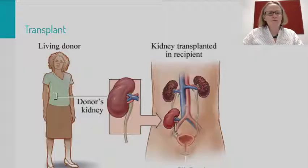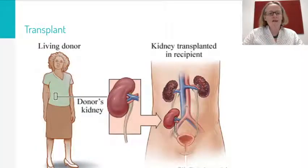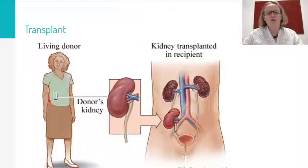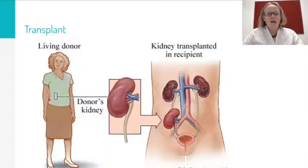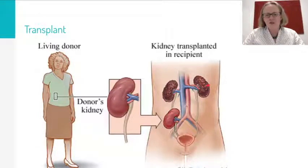For a transplant, we can take the kidney out of a living person — a person can survive with only one kidney, and the kidney that's left will get slightly bigger to compensate. We can put it into a person whose other kidneys might be damaged; you just graft it in and give it a blood supply from the artery and the vein,